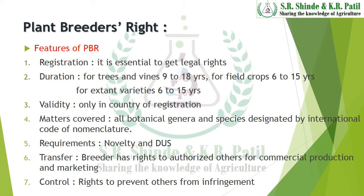Plant Breeders Right is valid only in the country of registration. All botanical genera and species designated by the International Code of Nomenclature can be covered under the Plant Breeders Right. To obtain the rights, the new variety must fulfill the requirements of novelty and DUS — distinctiveness, uniformity and stability. These three characters must be fulfilled to obtain registration of Plant Breeders Right.